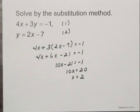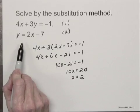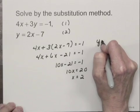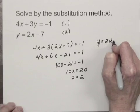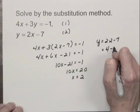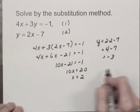Now we need to find the value for y, and we can use equation 2 to do this very easily. We just substitute 2 for x, and we have y is equal to 2 times 2 minus 7, which is 4 minus 7, or negative 3.